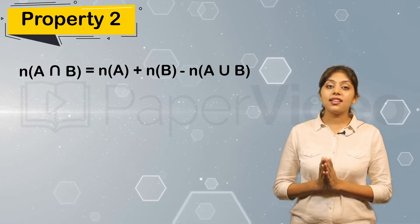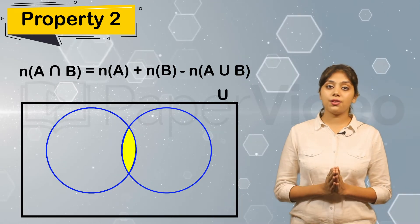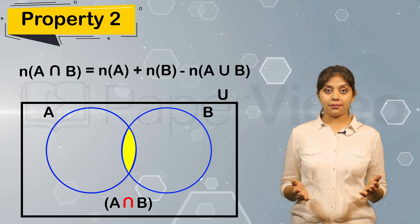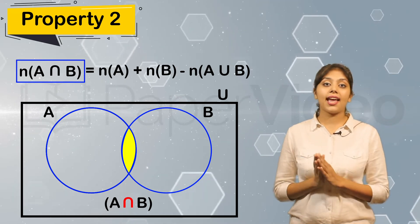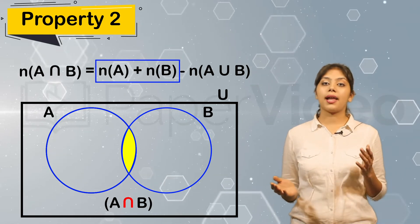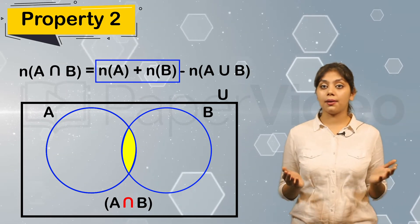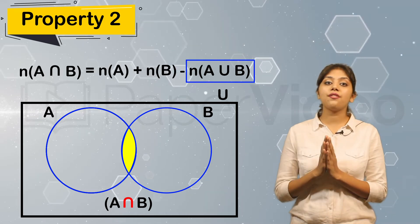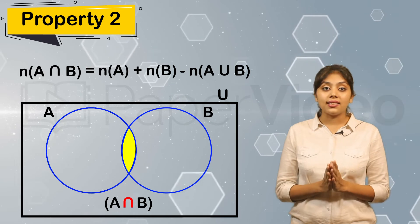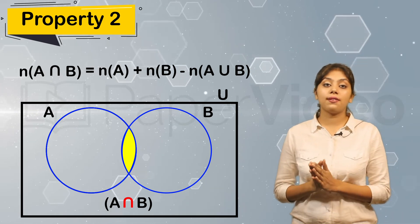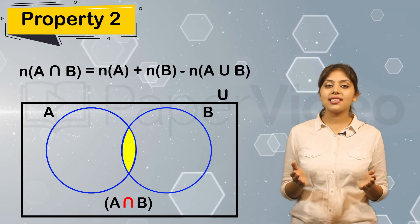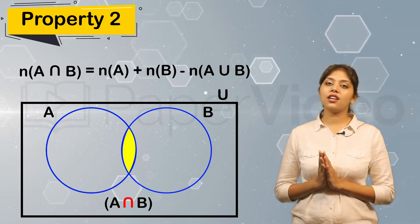Consider a Venn diagram of the intersection of two sets A and B. If we look at the diagram, the cardinality of the intersection of sets A and B will be equal to the cardinality of set A plus the cardinality of set B minus the cardinality of the union of sets A and B. Since we considered this section twice, we subtract it once to get the correct value. This is the second property of cardinality of sets.